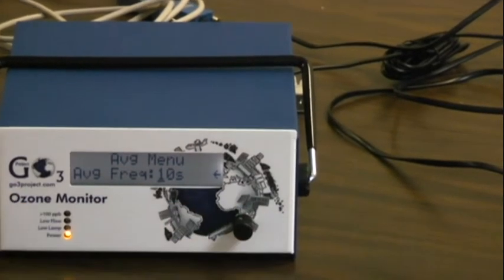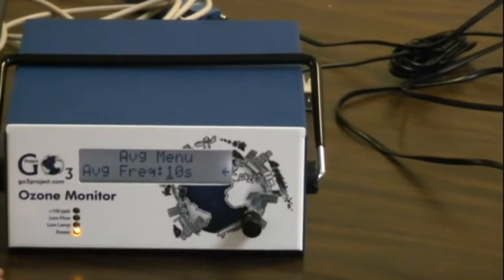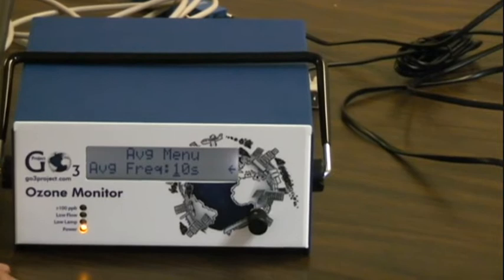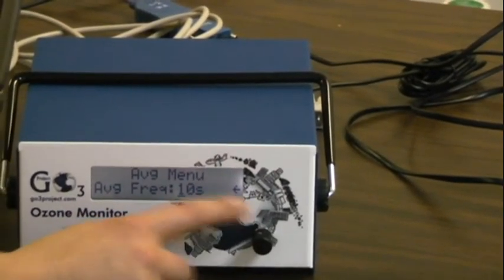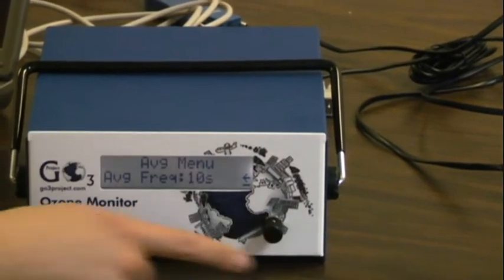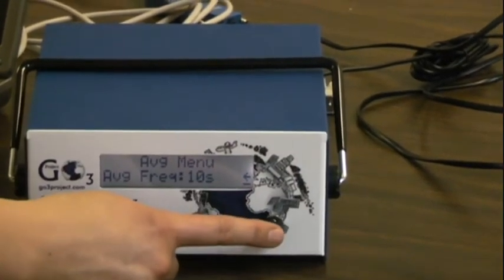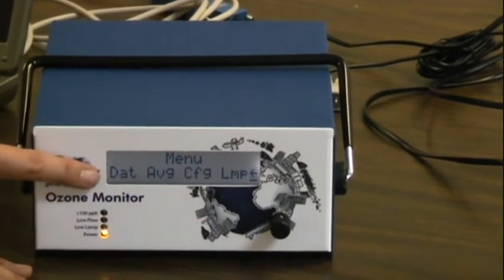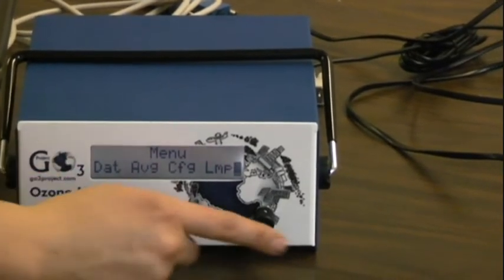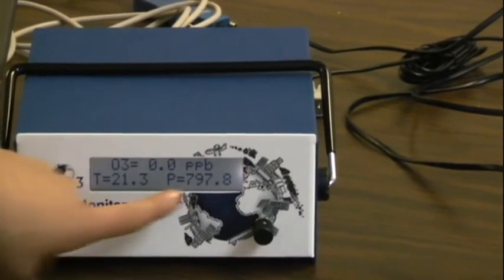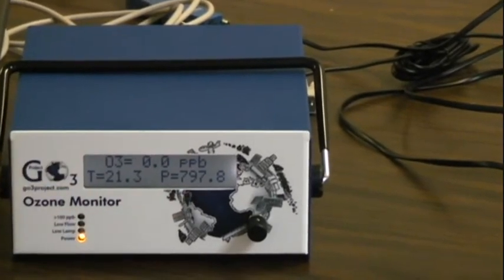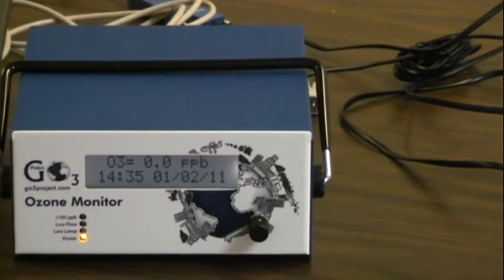To exit out of the menu, which is really important because it won't send any data if it's still in the menu, you definitely need to exit out. You go over to this little carrot over here, have your cursor on that, click once. That gets you to the menu above the one we were just in, and click another time and that will get you out of the menu. When you see O3 equals, that's when you know you're in the right menu.